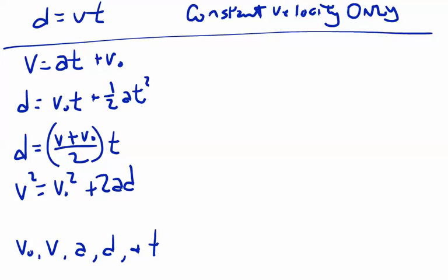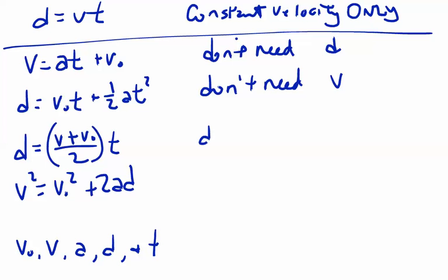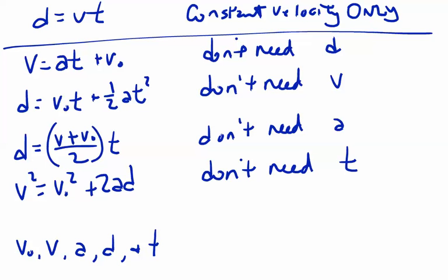We can organize these equations by the variable that is missing from each one. Equation one doesn't need displacement d. Equation two doesn't need final velocity v. Equation three doesn't need acceleration a. Equation four doesn't need time t. Notice that v-naught, the starting velocity, appears in every equation — so if we don't have it, we need to find it first using another equation. That's how we derive these equations, and later we'll talk about how to use them.